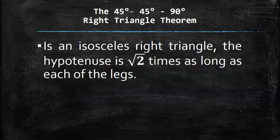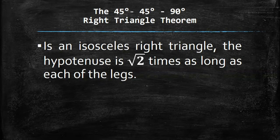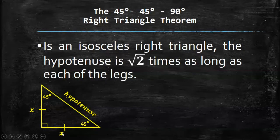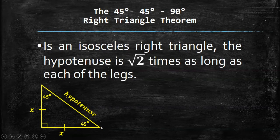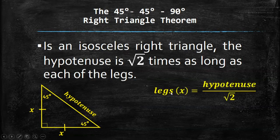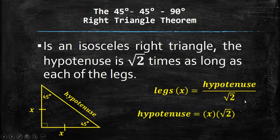The 45-45-90 degree right triangle theorem states that in an isosceles right triangle, the hypotenuse is square root of 2 times as long as each of the legs. We represent the legs as x because they are equal to each other. The hypotenuse is always opposite the 90-degree angle. To get the legs, the formula is hypotenuse over square root of 2; to get the hypotenuse, the formula is x multiplied by square root of 2.